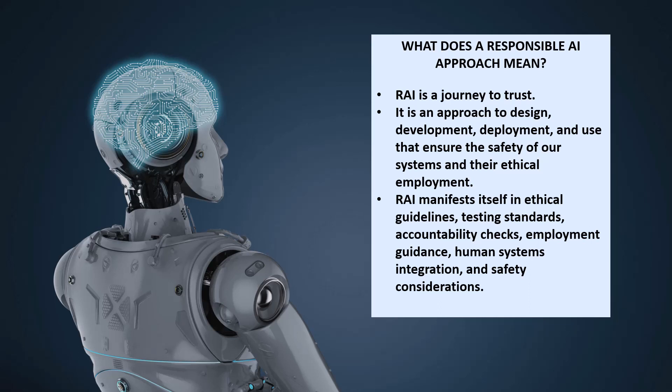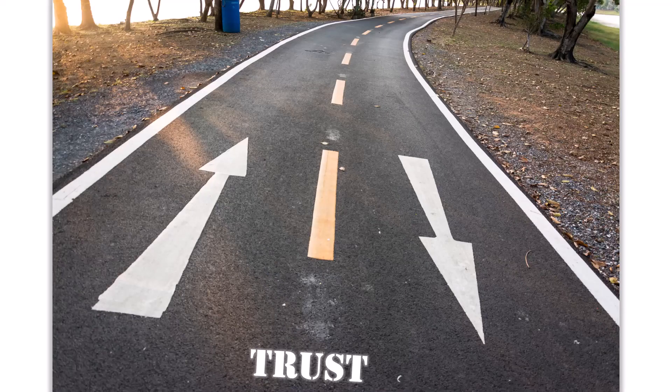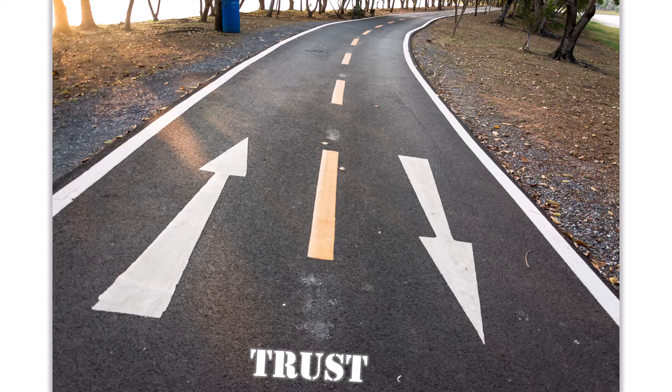Responsible AI manifests itself in ethical guidelines, testing standards, accountability checks, employment guidance, human systems integration, and safety considerations. And there are really two aspects of that trust and that journey to trust when you're talking about AI.